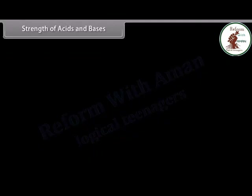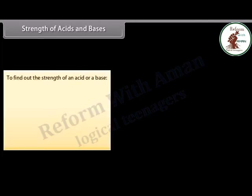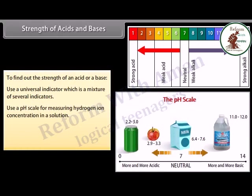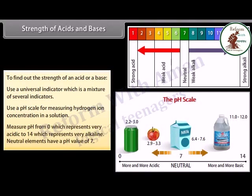Strength of acids and bases: you need to use a universal indicator to find the amounts of ions present in a solution, or to find out how strong an acid or base is. The universal indicator is a mixture of several indicators and shows different colors at different concentrations of hydrogen ions. A pH scale is a scale for measuring hydrogen ion concentration in a solution, ranging from 0 (very acidic) to 14 (very alkaline). Neutral elements have a pH value of 7.